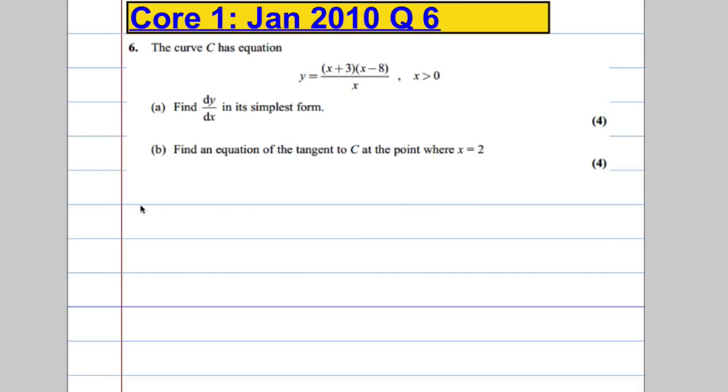Right, so question 6, we're told that the curve C has the equation y equals x plus 3 times x minus 8 all over x, and we're asked to find dy dx in its simplest form. Okay, first thing we're going to do is, I'm going to expand out that top bracket, I don't like the way it is.